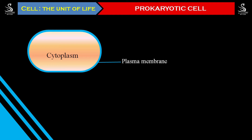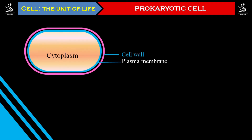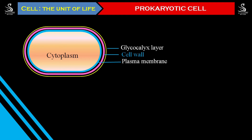Following the plasma membrane, all prokaryotic organisms have one more layer called the cell wall. The cell wall is a glycopeptide-made layer — in some organisms it is very thick, and in some it is very thin. Outside the cell wall there is one more layer called the glycocalyx layer. All three layers together form a unit called the cell envelope.